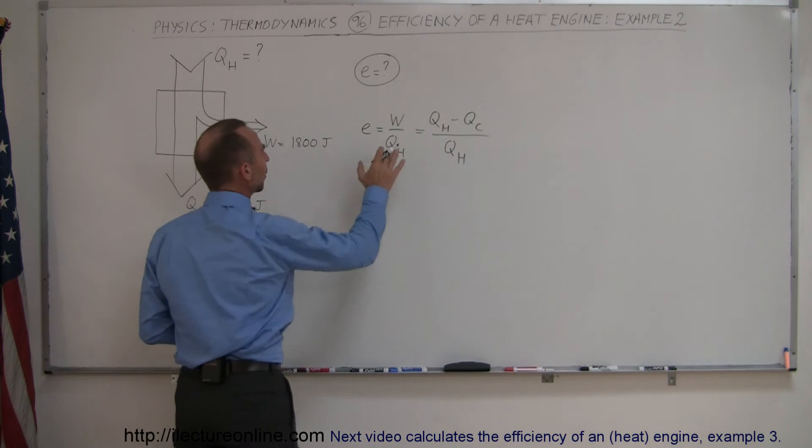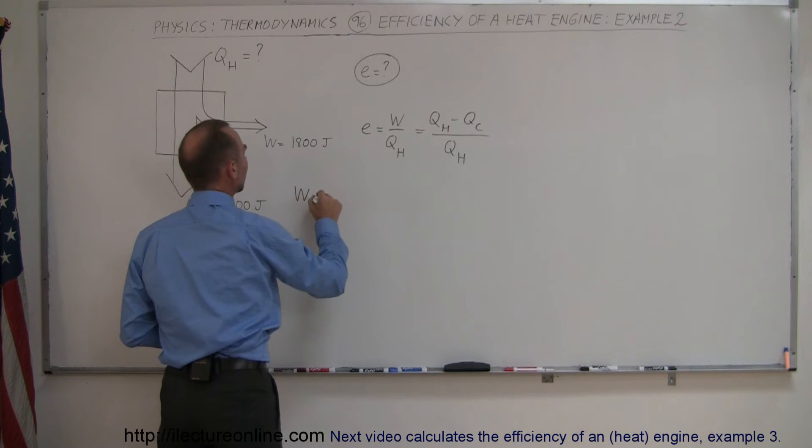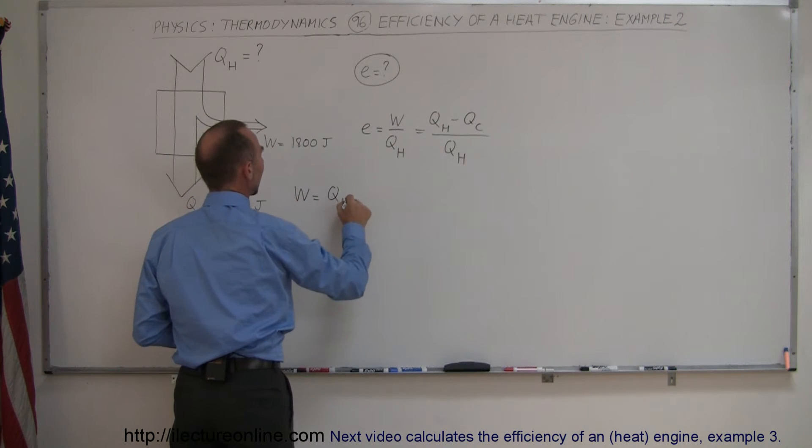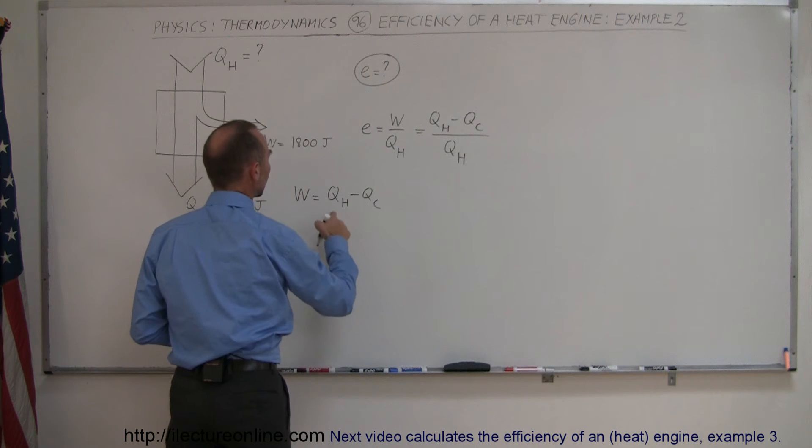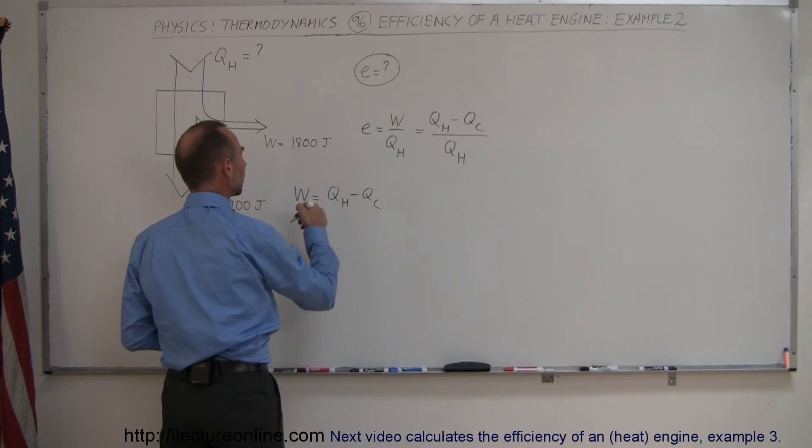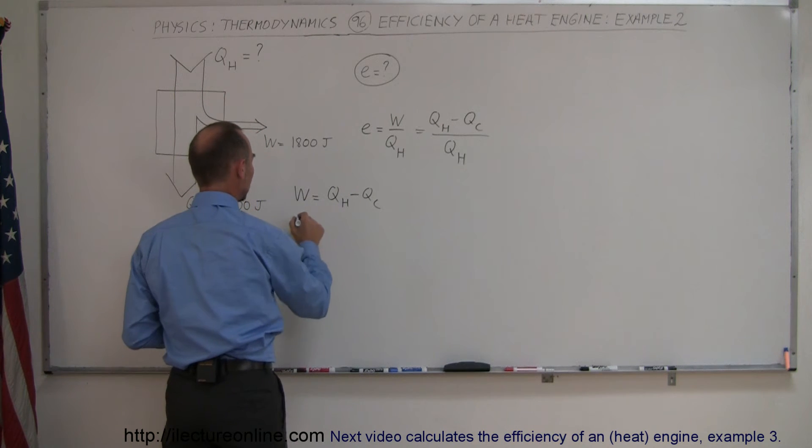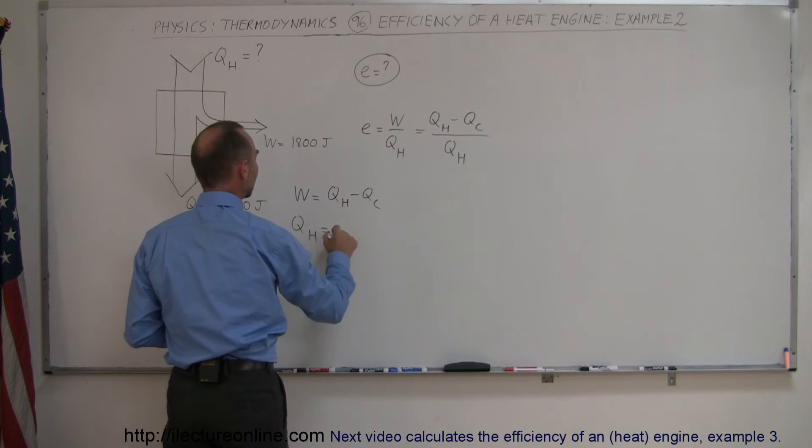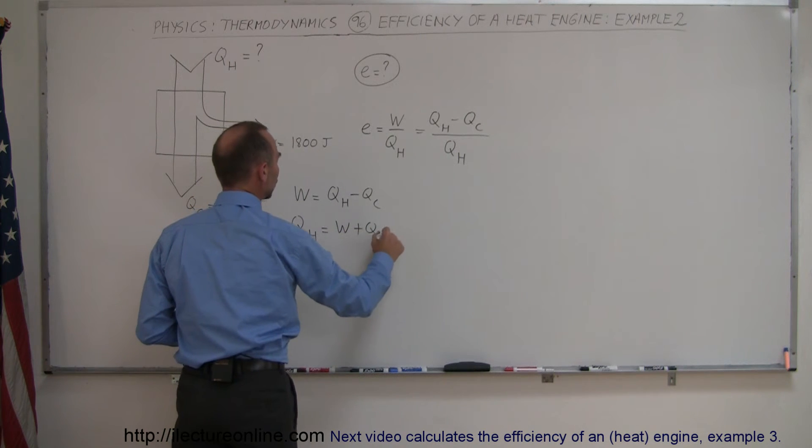Well, we go back to the equation that the work done equals Q_hot minus Q_cold. In other words, if I put Q_cold on the other side and rearrange the equation, I can write that Q_hot equals work plus Q_cold.